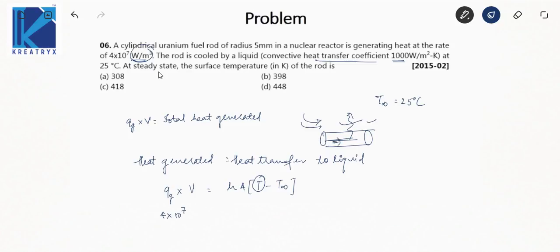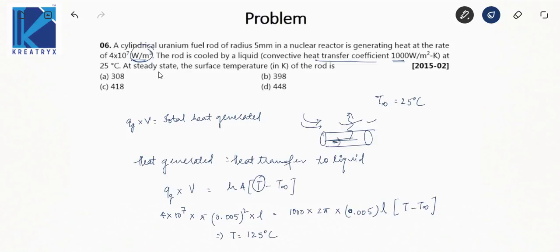Substituting values: 4×10⁷ × π × (0.005)² × L = 1000 × 2π × 0.005 × L × (T − T∞). Solving gives T = 125°C. Since the answer is asked in Kelvin, T = 125 + 273 = 398 K.